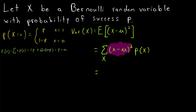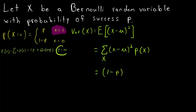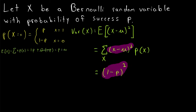One possible value of (x minus mu) squared: if x equals 1, then (x minus mu) squared equals (1 minus p) squared, since mu equals p. The probability that (x minus mu) squared equals (1 minus p) squared is the probability that x equals 1, which we write as P(1).